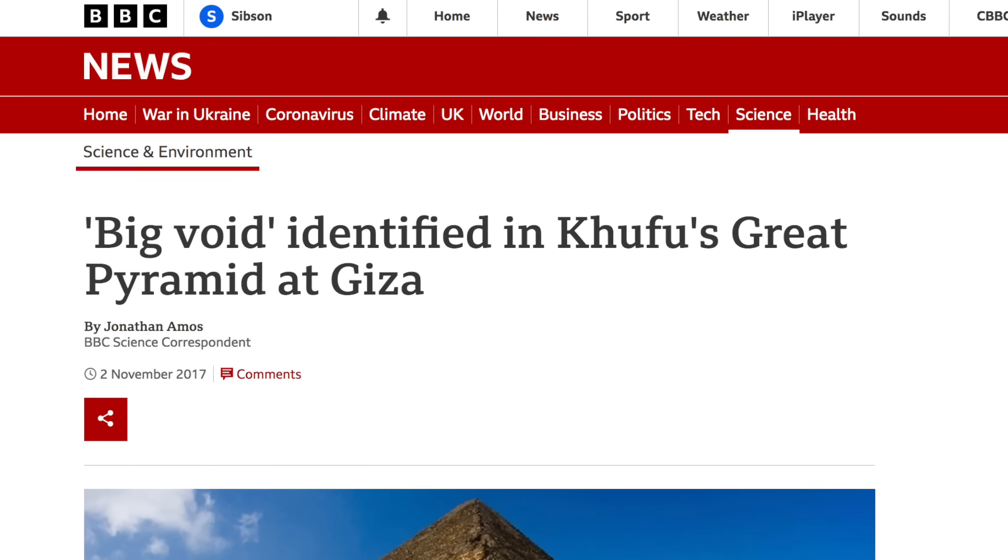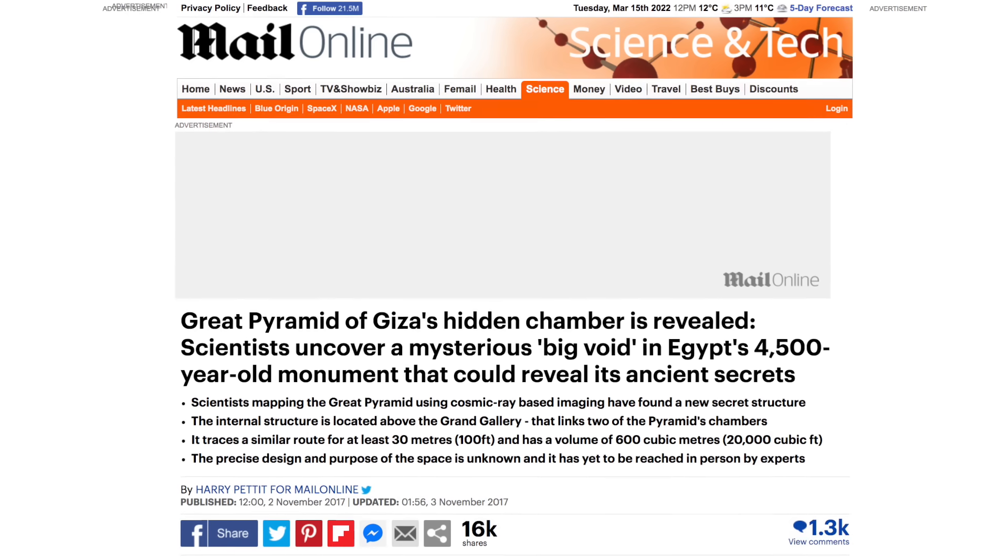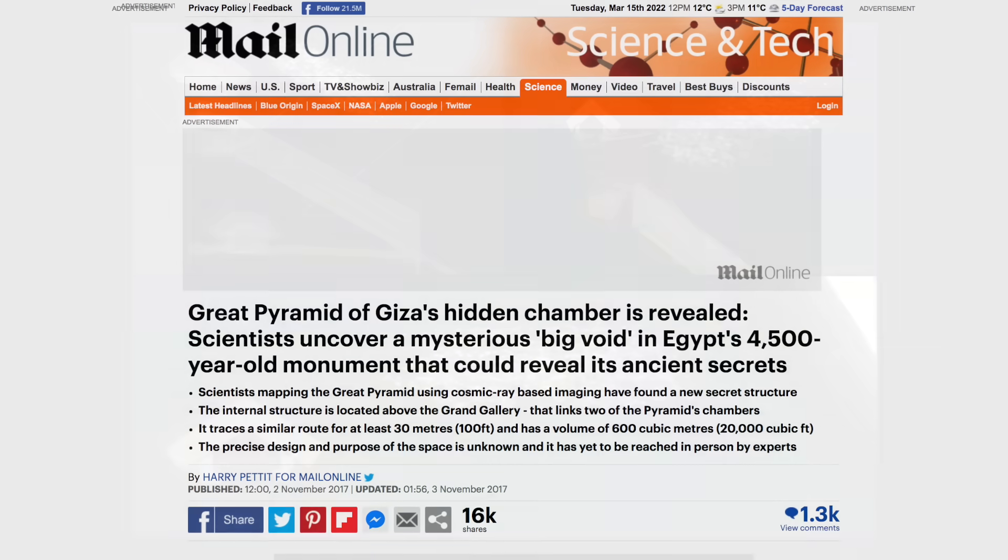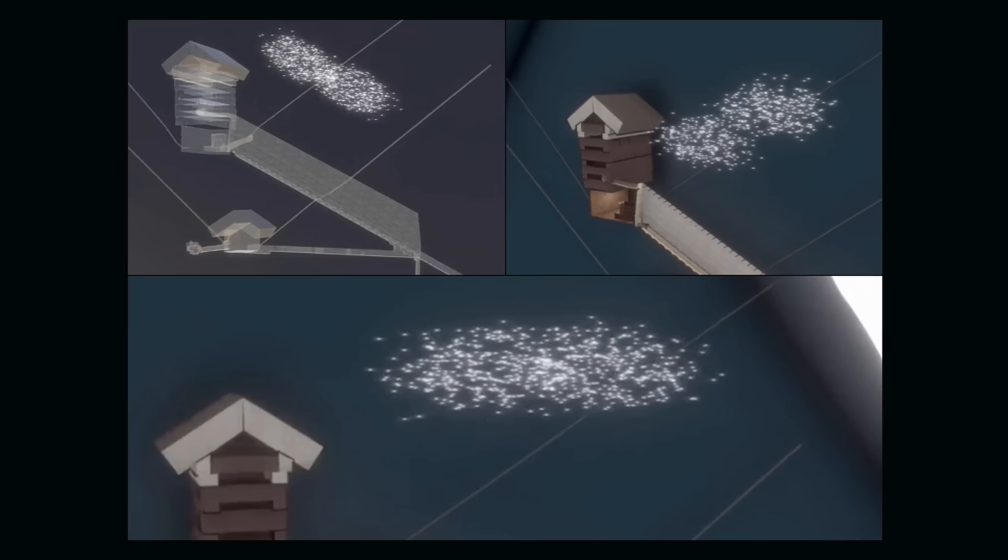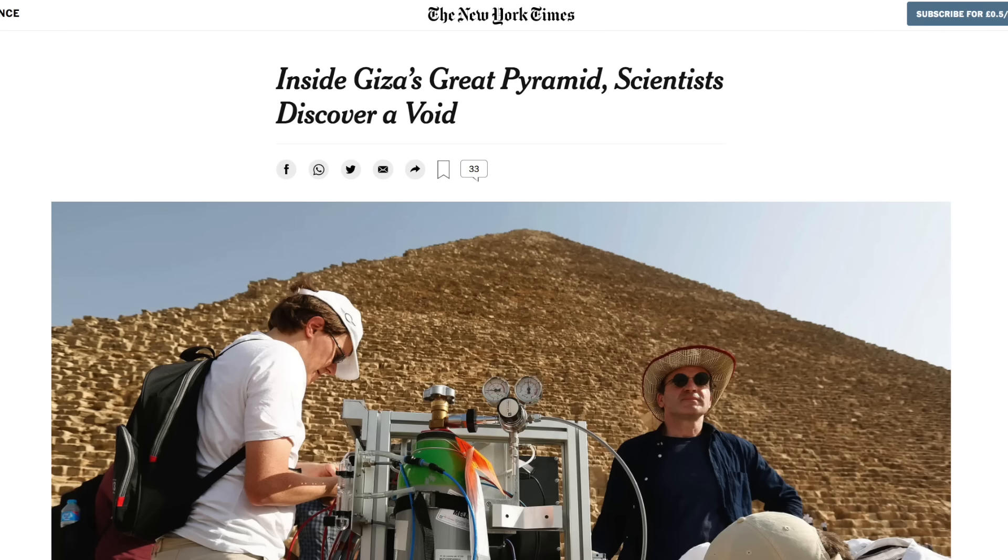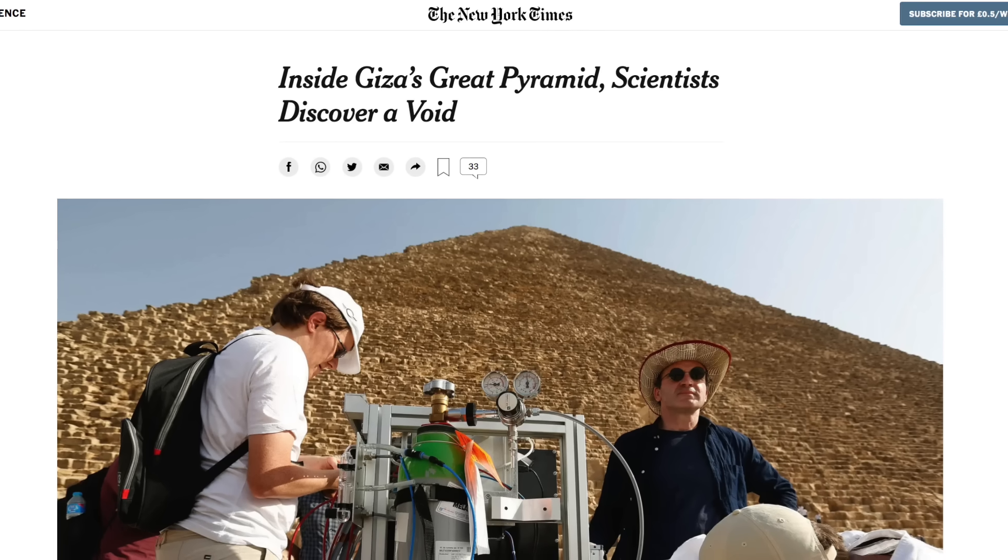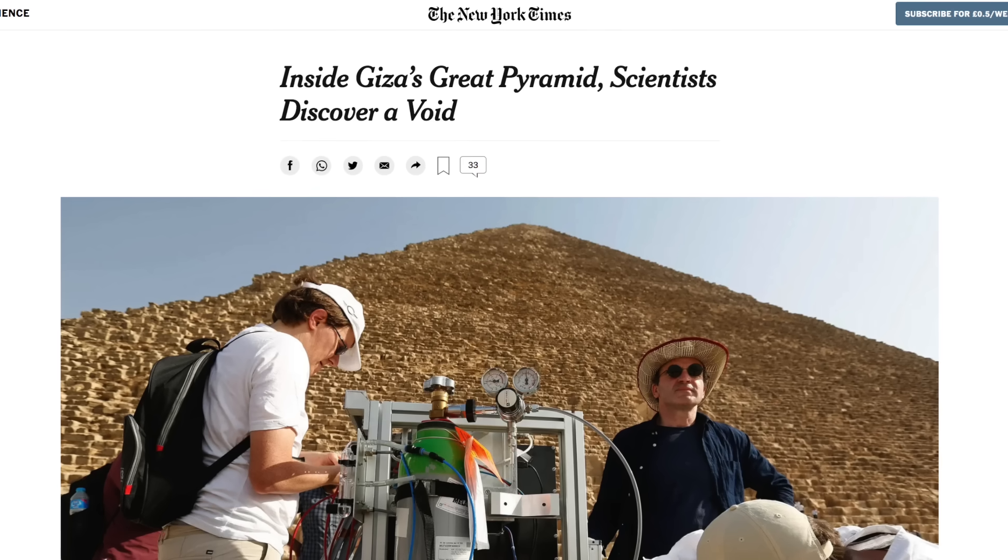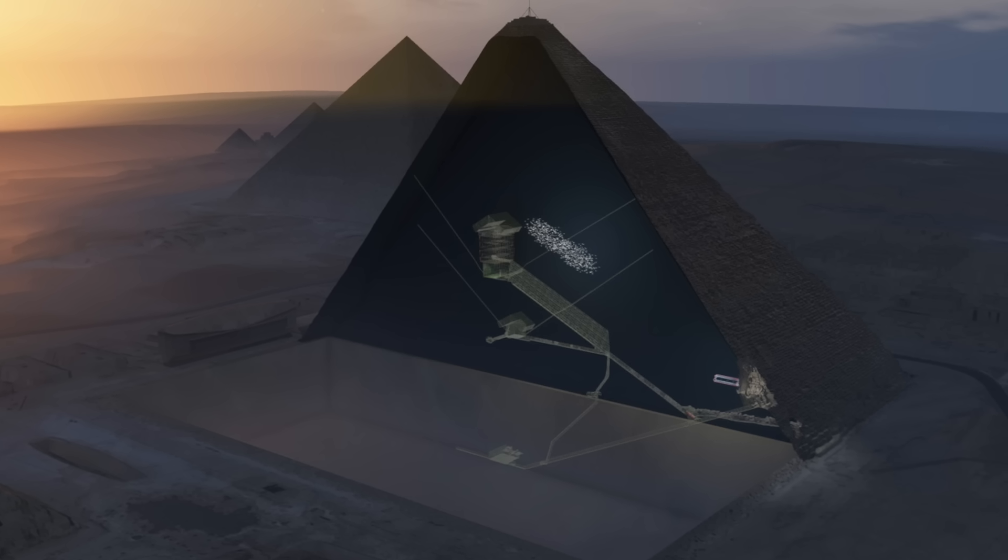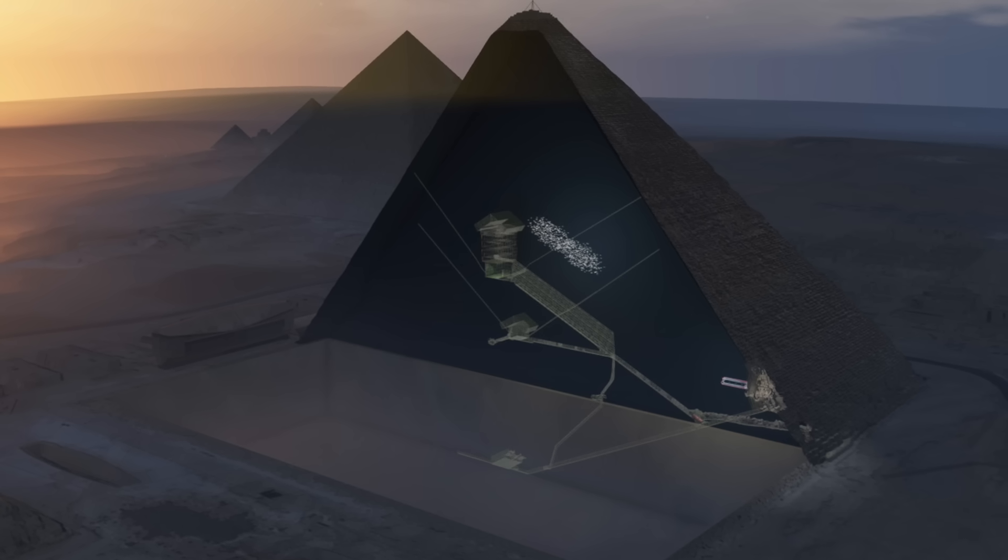We all remember the breaking news in November 2017 when the ScanPyramids project announced the discovery of a big void in the Great Pyramid of Egypt, located above the Grand Gallery and being either straight or inclined. The news permeated the international media and I think that everyone with an interest in Ancient Egypt was excited. It was the second major cavity located inside the pyramid using something called cosmic muon science.